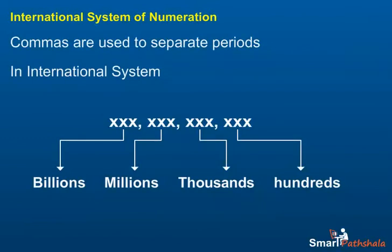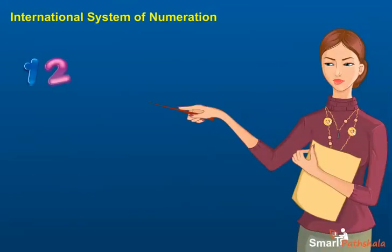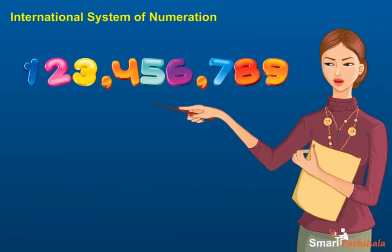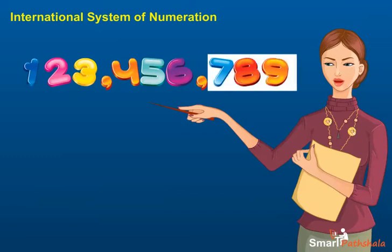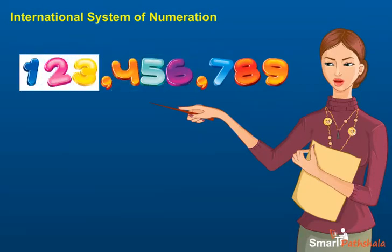To separate two periods, we put a comma between them. In this system, we put a comma after every three digits from the right. Consider the number 123456789. To separate the periods, we put commas as shown: 789 belongs to the ones period, 456 belongs to the thousands period, and 123 belongs to the millions period.